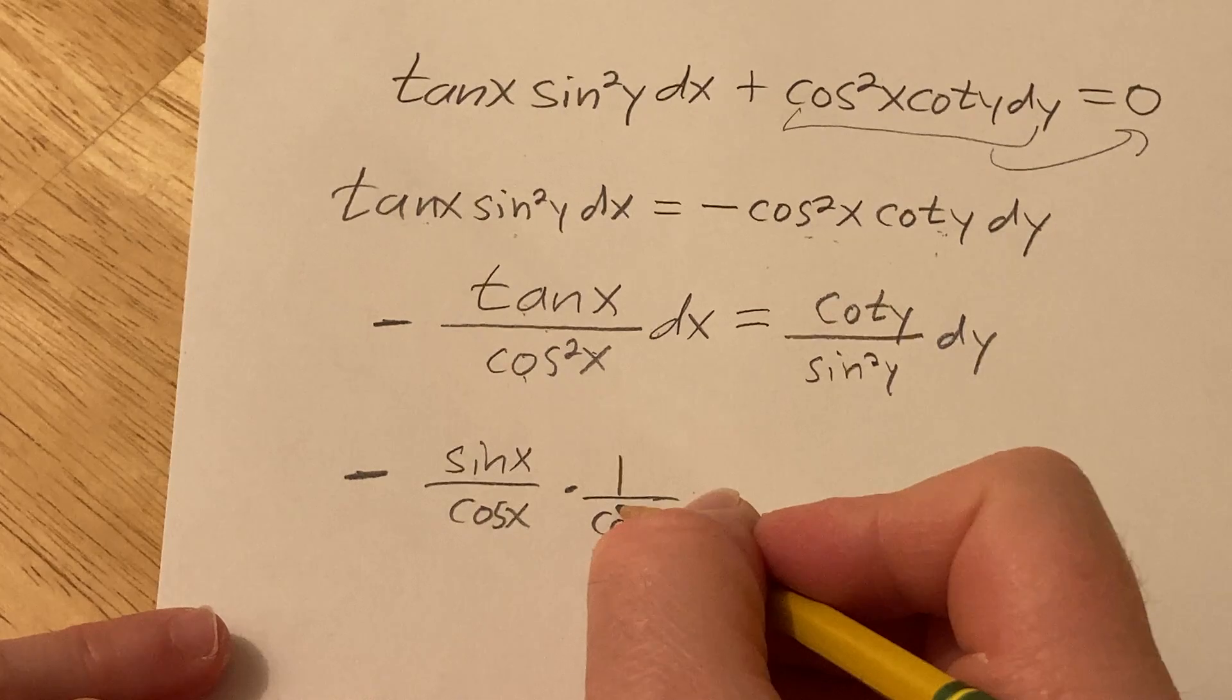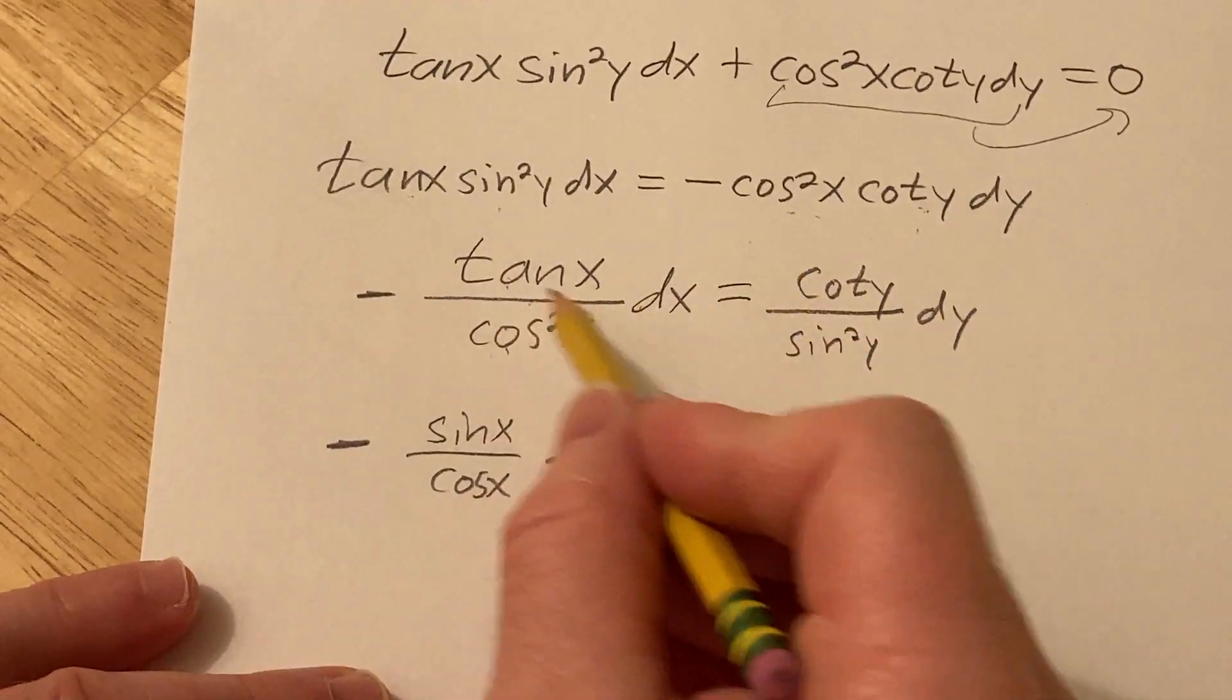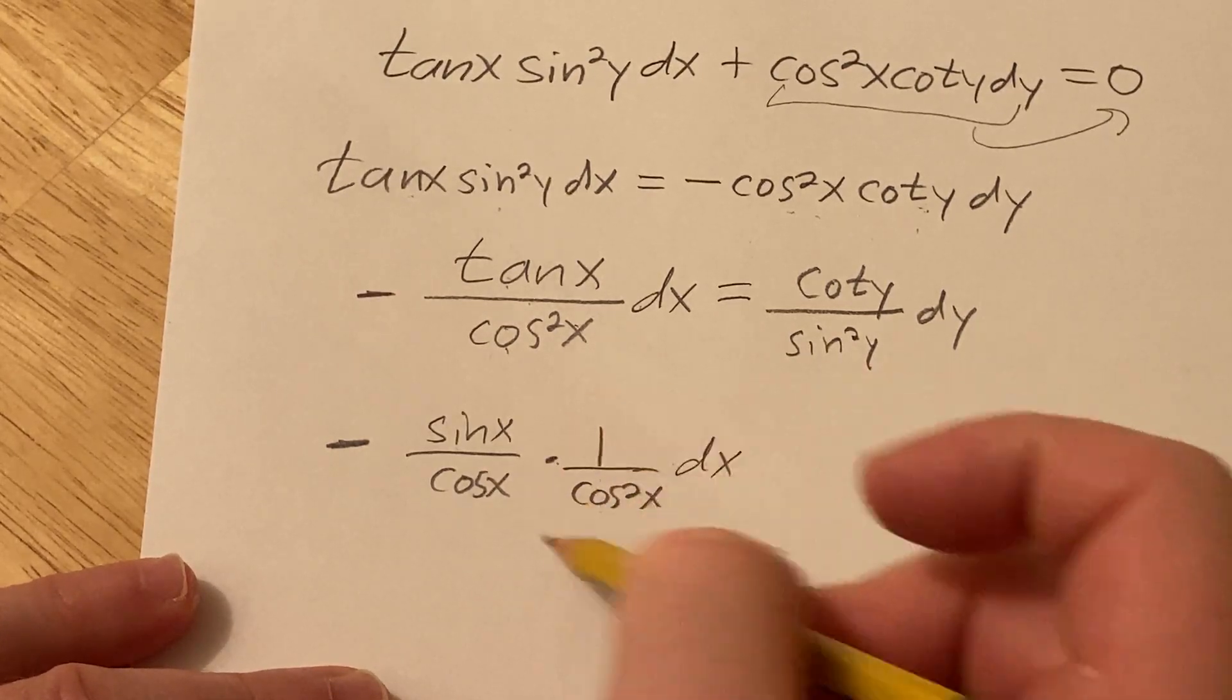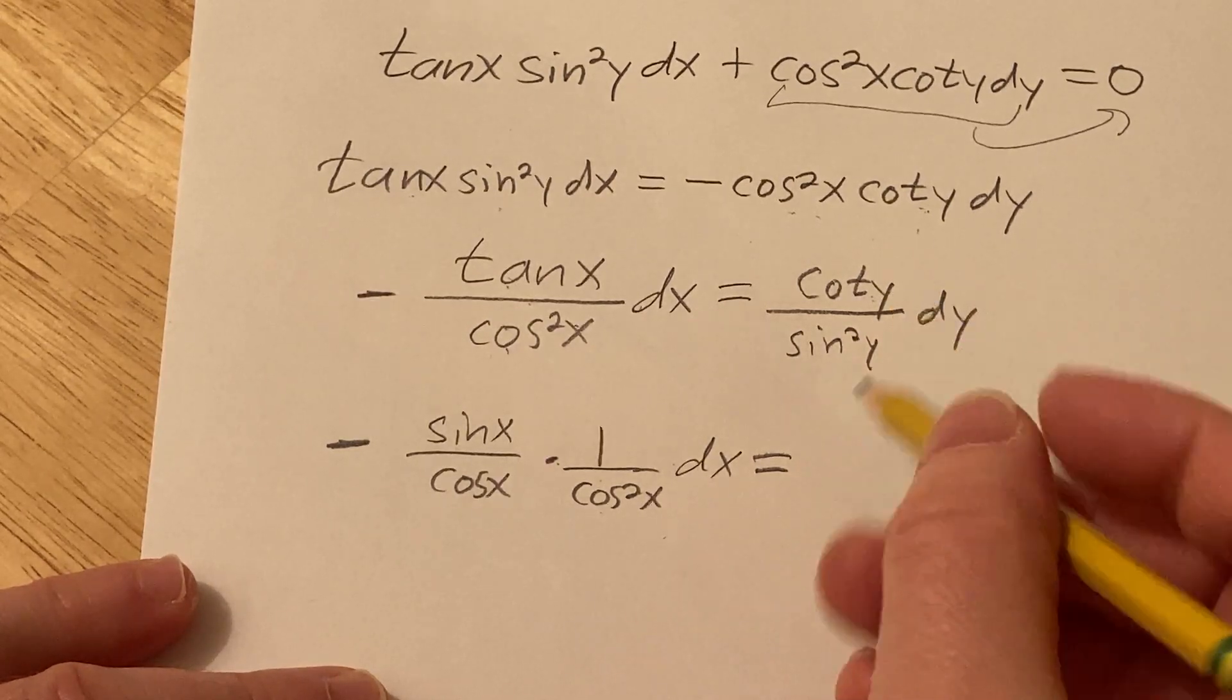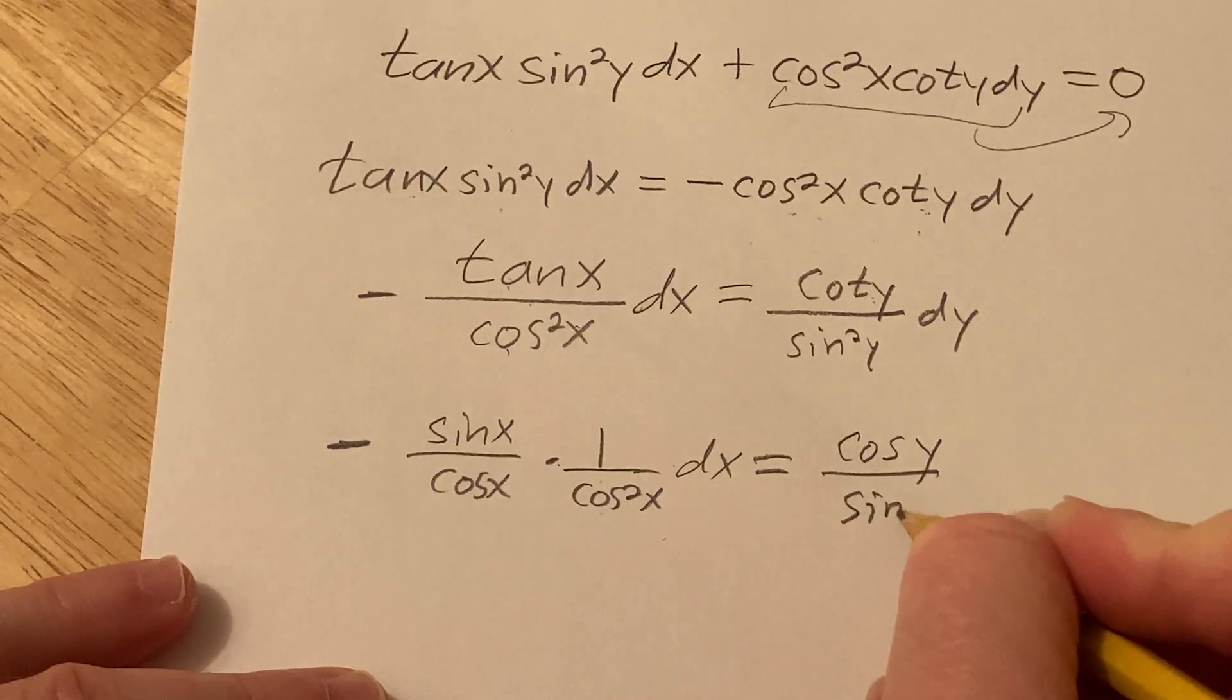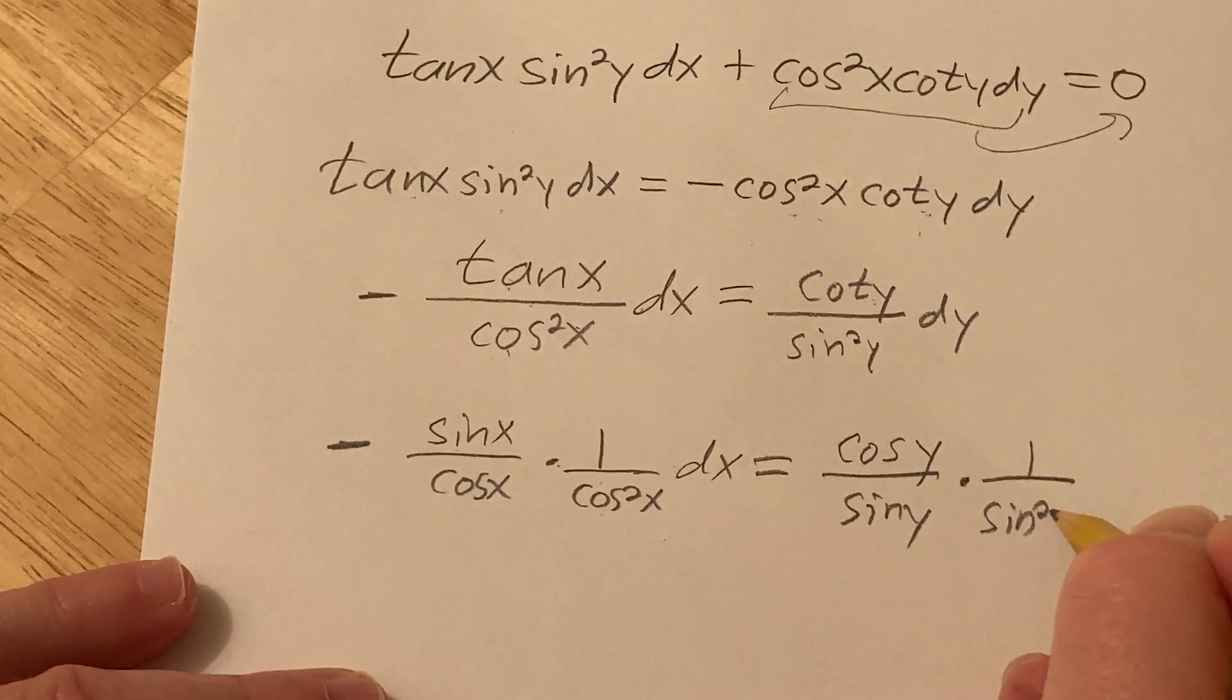Right, because we're dividing by cosine squared, same thing as that, just to make it easier, just so it's not like a fraction over a fraction, right, because we're dividing by cosine squared, so I thought let me write it as times one over cosine squared, just to make it easier for me to look at. Same thing here, cotangent is cosine over sine, so I'm going to write it as cosine y over sine y times one over sine squared y dy.